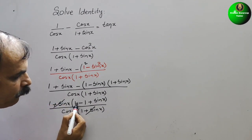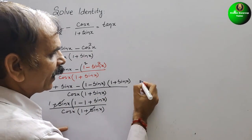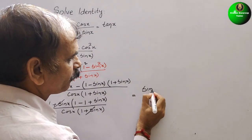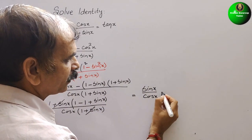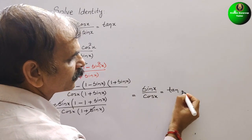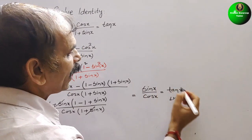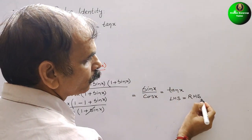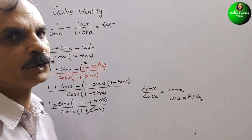After cancellation, 1 minus 1 is 0, so we are left with sin x / cos x times (1 + sin x) cancels out, giving sin x / cos x. That equals tan x. So LHS equals RHS, and the identity is proved.